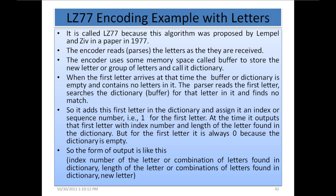The encoder reads or parses the letters as they are received. The encoder uses some memory space called a buffer to store the new letter or group of letters, and this is called the dictionary. When the first letter arrives, the buffer or dictionary is empty. The parser reads the first letter, searches the dictionary buffer for that letter, and finds no match. So it adds this first letter to the dictionary and assigns it an index or sequence number — that is 1 for the first letter. It then outputs that first letter with the index number and length of the letter found in the dictionary. For the first letter it is always 0 because the dictionary is empty. The output format is: index number, length of the letter or combination found in the dictionary, then the new letter.